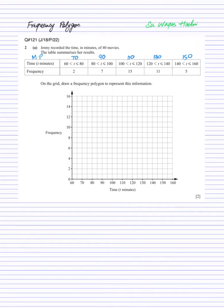So frequency polygon basically will be plotted on the midpoints and the value of your frequency. So at 70 the value is 2, I am going to plot the value at 70 it will be 2. Similarly at 90 that will be equals to 7, so at 90 it will be 7.